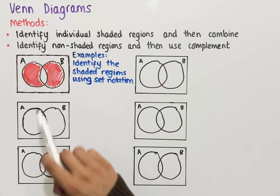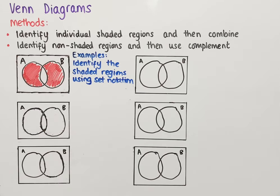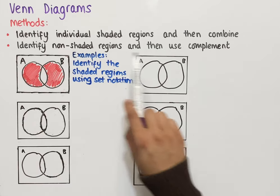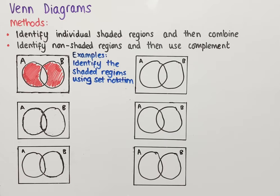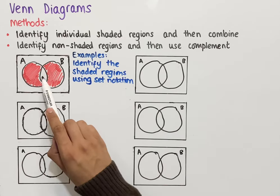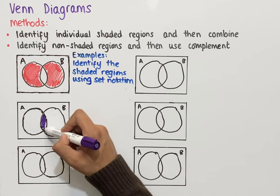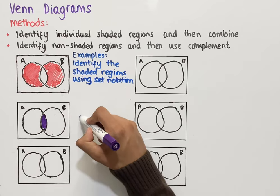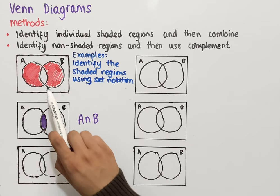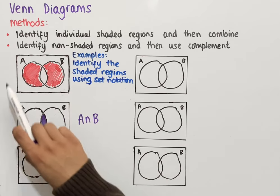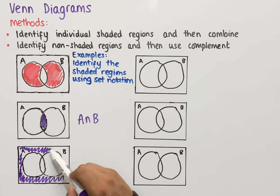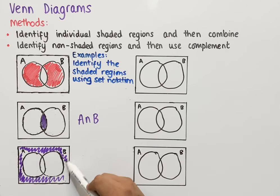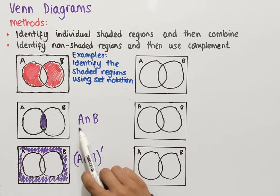In the final example we use the second method again: identify the non-shaded regions and then use complement. The first non-shaded region is the middle overlap, which we identified previously as A intersect B. We also have the non-shaded region outside both circles, which we identified previously as the complement of A union B.